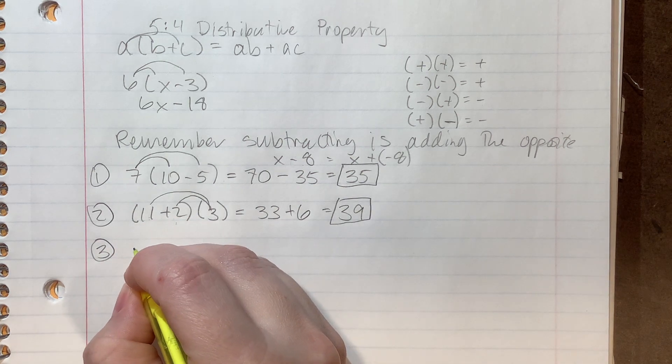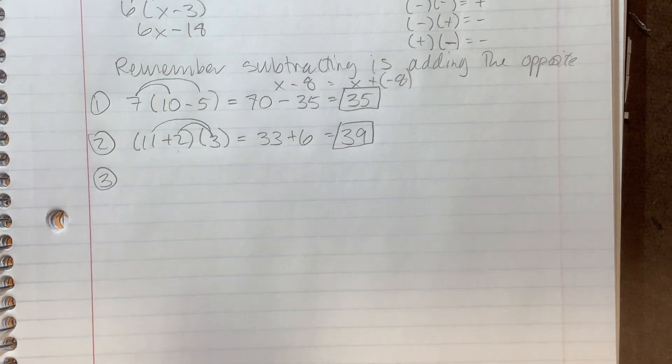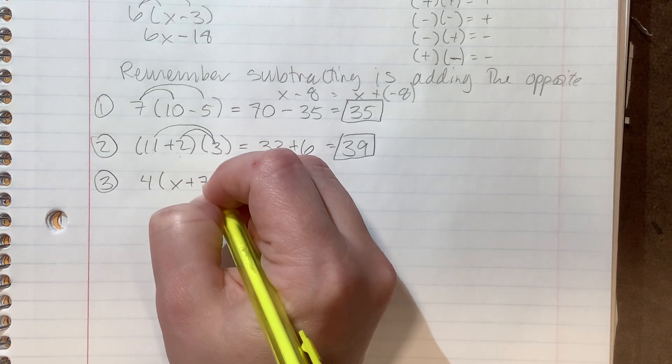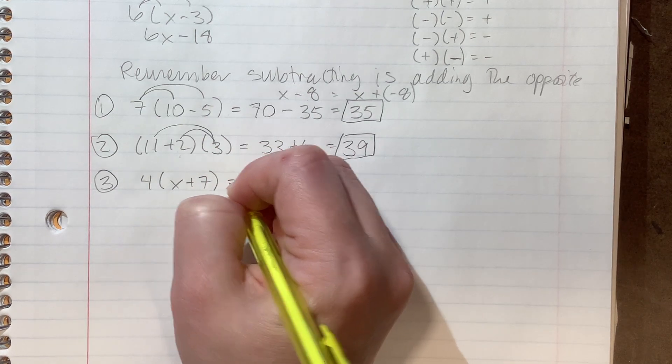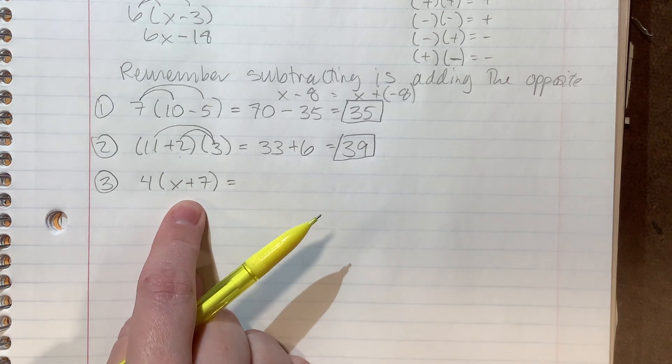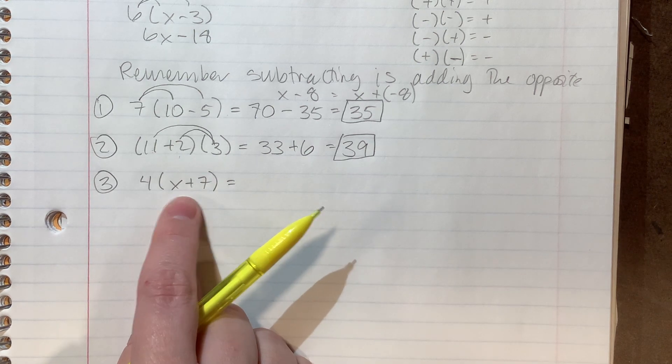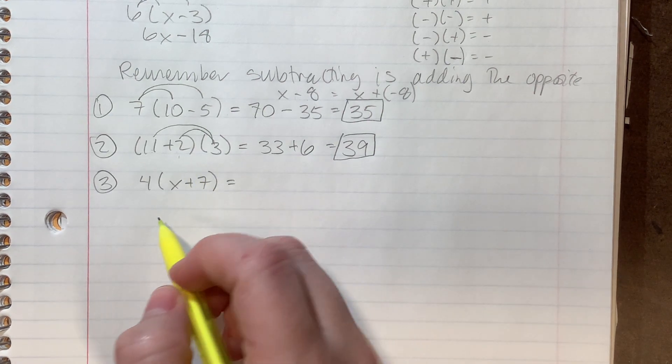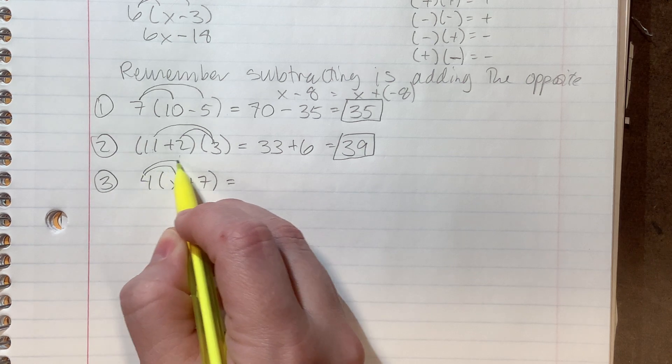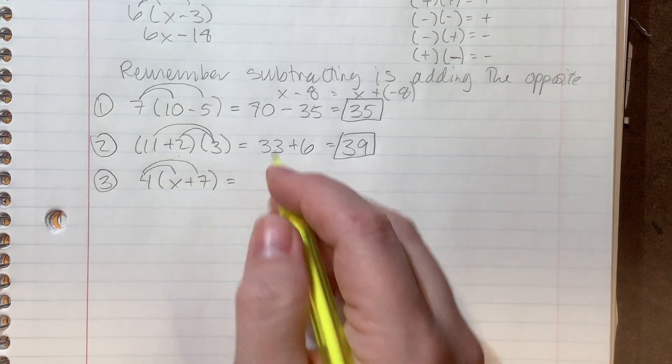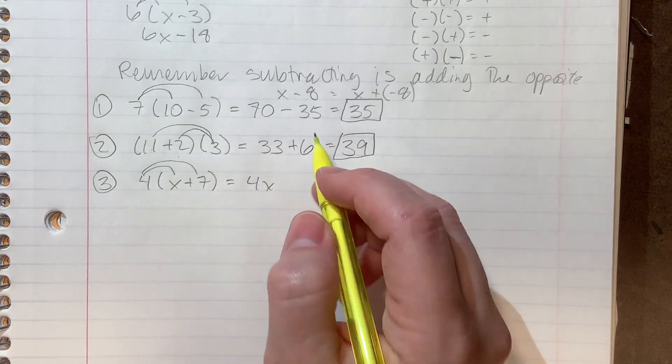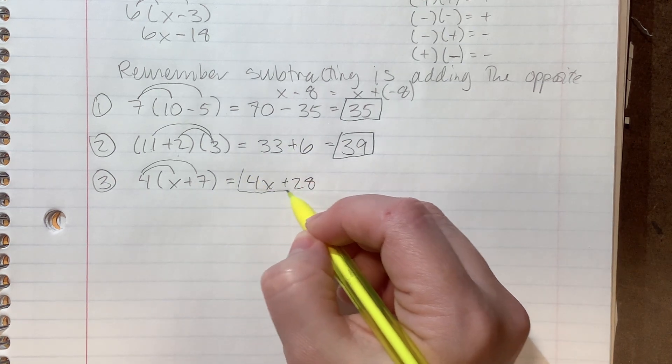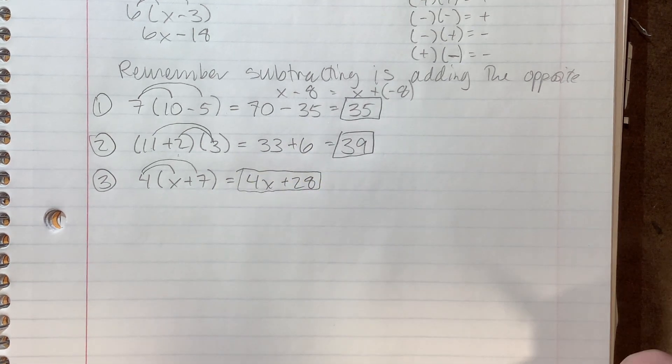The rest of them, you're just going to practice with some variables in there as well. So what that looks like is we're going to start with four times x plus seven. Now we can't add these two terms together. We're going to talk more about this in the next lesson because they are different terms. And so we cannot add them together. So in order to get rid of the parentheses, so we can do other math with it, we're going to multiply the four through. So four times x is 4x. And four times seven is 28. And done. That's all we can do. That is finished. Done and done.